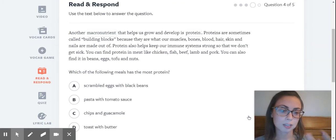Another macronutrient that helps us grow and develop is protein. Proteins are sometimes called building blocks because they are what our muscles, bones, blood, hair, skin, and nails are made out of. Proteins also help keep our immune system strong so that we don't get sick. You can find protein in meat like chicken, fish, beef, lamb, and pork. You can also find it in beans, eggs, tofu, and nuts. So there's some different places you can find your protein that you need. You can be a vegetarian and still get the protein that you need. You do not necessarily have to eat meat to get the protein that is necessary for your daily tasks.